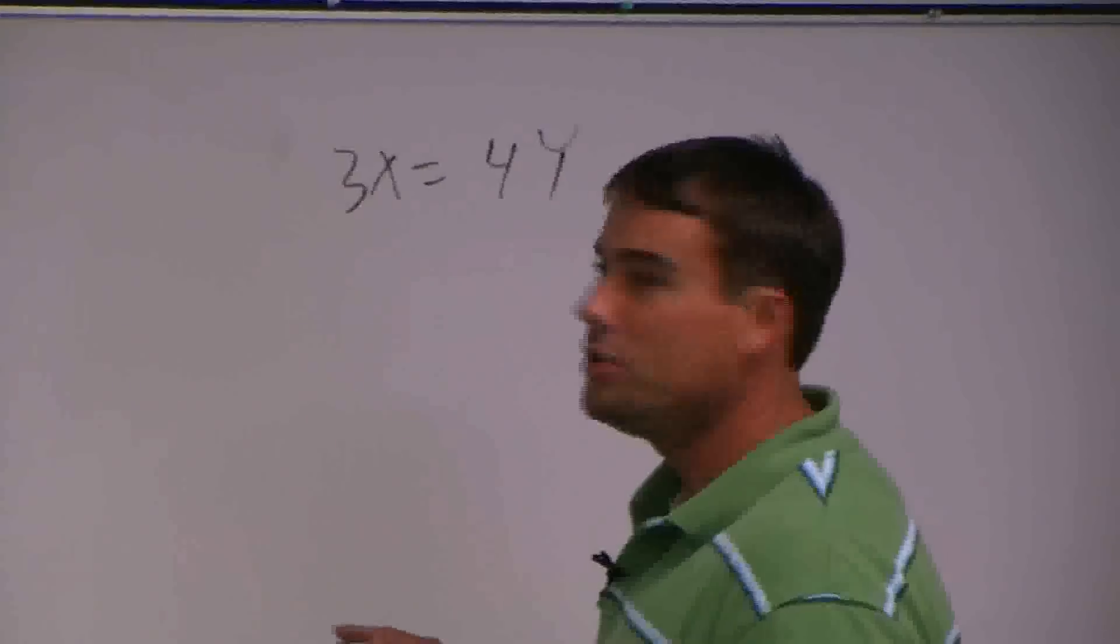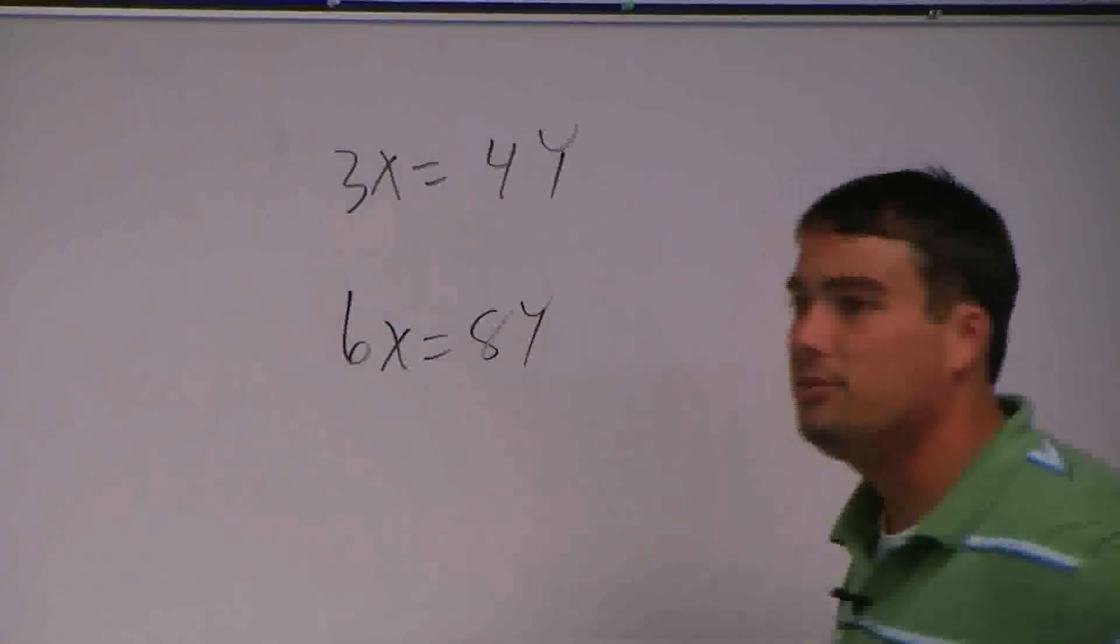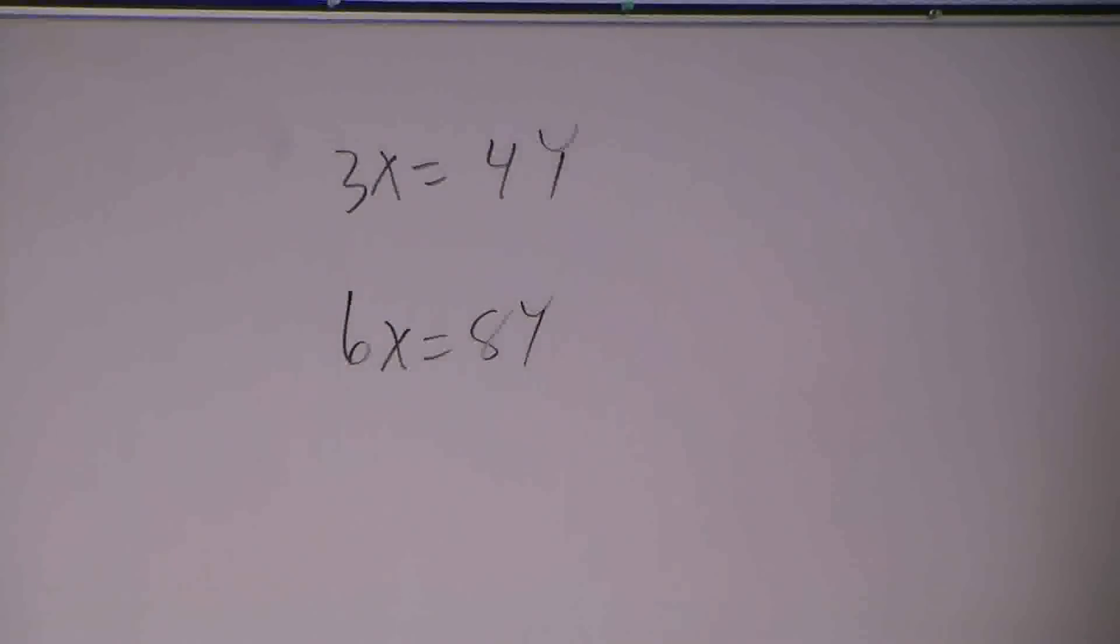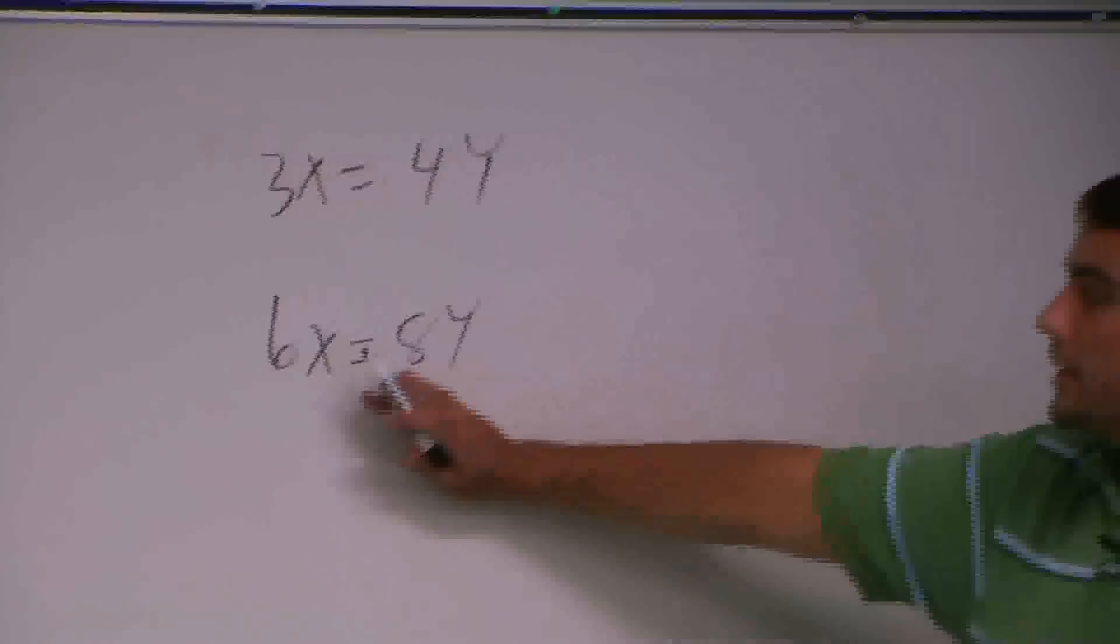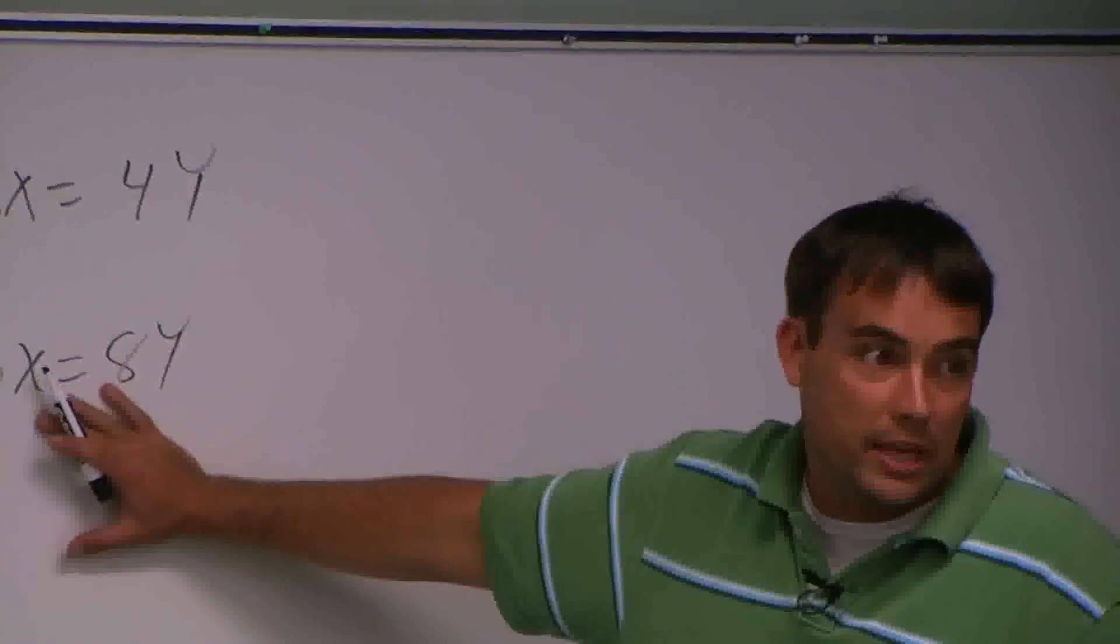And let's just say that I multiply everything by two. I would have six x equals eight y. Is there a difference in these equations? No. They're not. But here's the key. You can multiply an equation by anything you want, but you've got to do it to both sides all the way through.